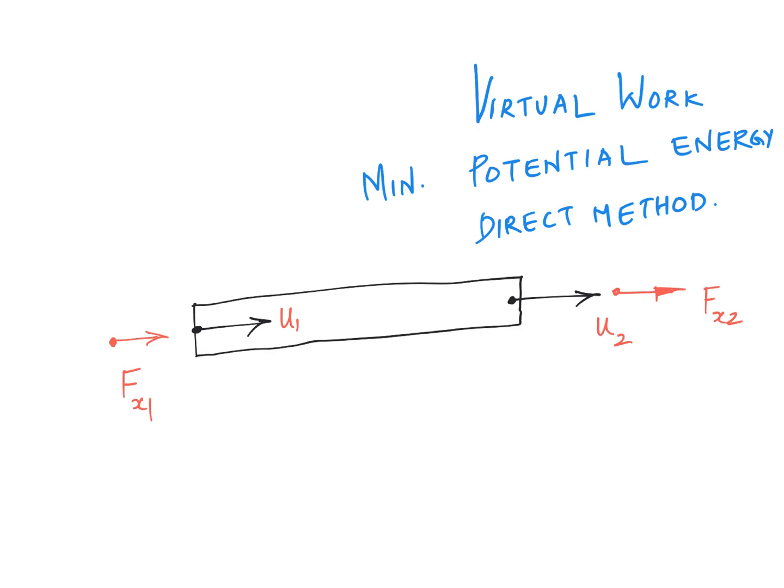What I have shown over here is a two degree of freedom bar element. These are the two nodes, node number one and node number two, and the displacements along the x direction. At node number one is u1 and at node number two it is u2, and there are external forces acting at the nodes again in the same direction because it's just a single degree of freedom at one node.